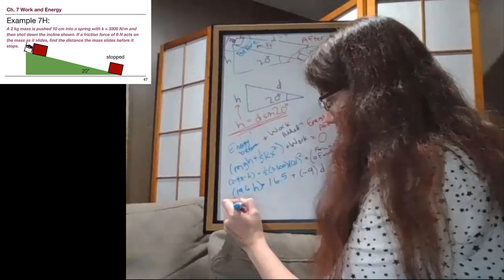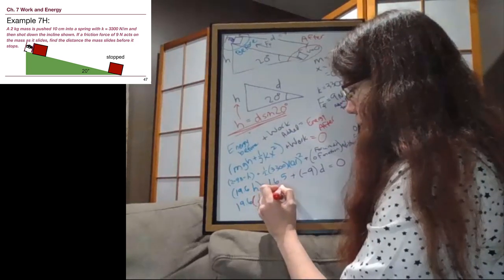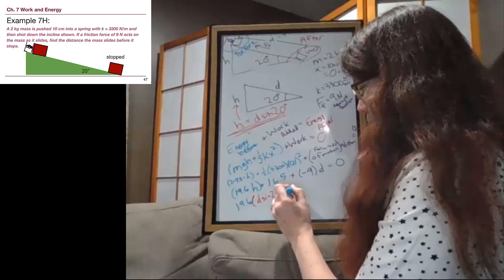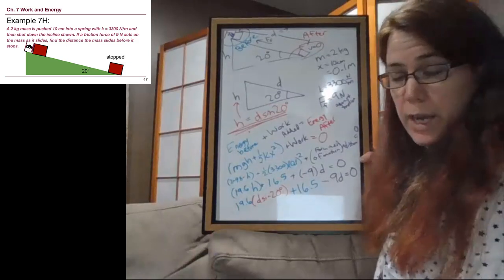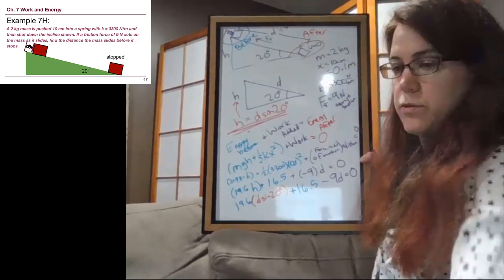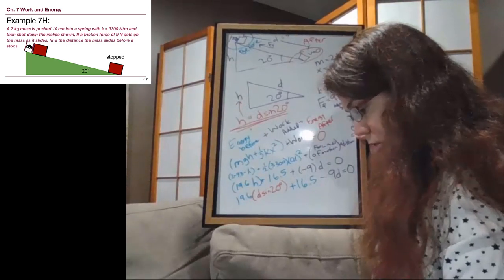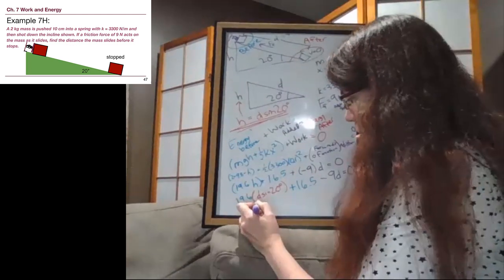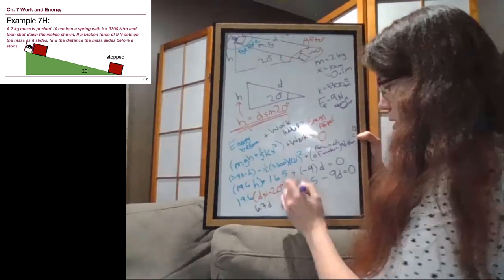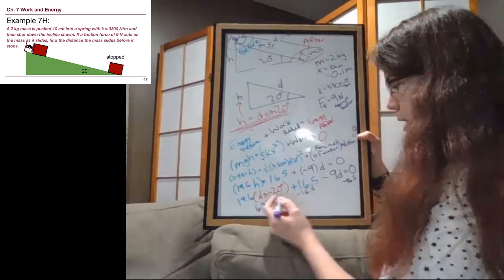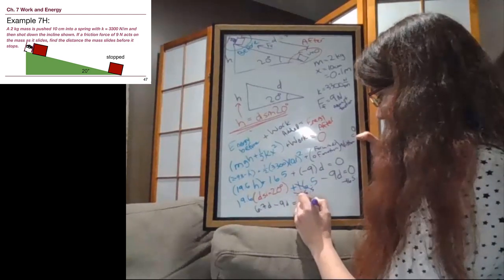We've got the 19.6, and now just so that we can track it in red, I'm going to write it down here: D times the sine of 20 degrees, plus 16.5 minus 9D equals 0. I'm going to switch to purple for the remaining two lines. 19.6 times the sine of 20 degrees is 6.7, so this is 6.7 times D. I'm going to subtract 16.5, the one that doesn't have D associated with it, minus 16.5 from both sides. We do still have minus 9D here on the left, and so if this goes away, then on the right side we have negative 16.5.